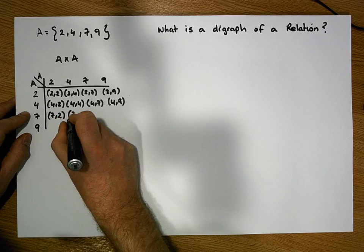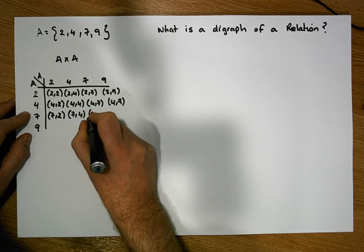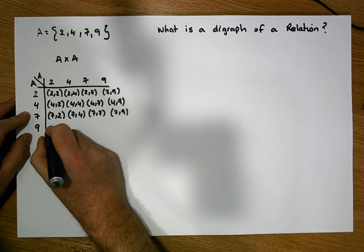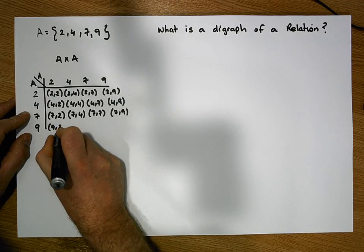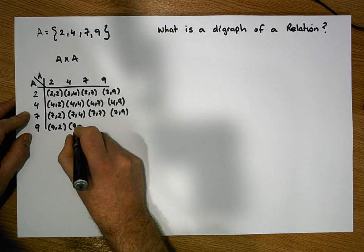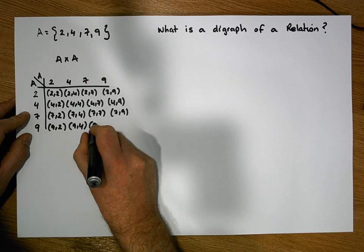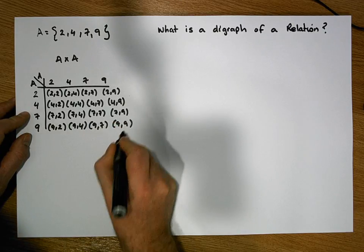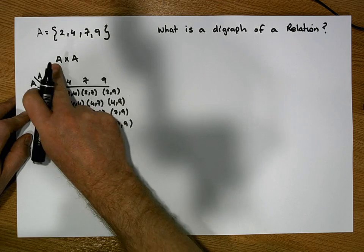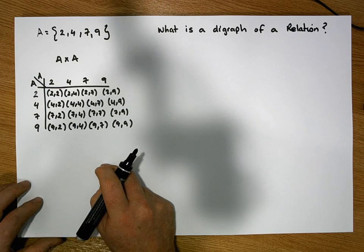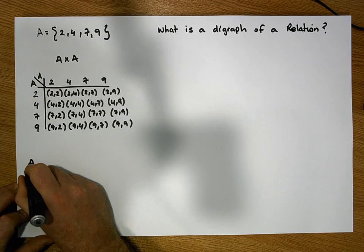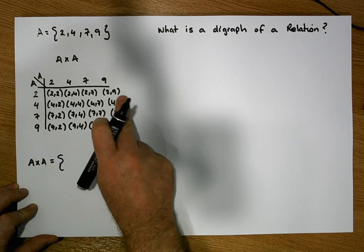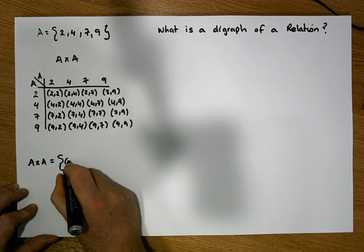Continuing, we have 7 with 4, 7 with 7, and 7 with 9, then 9 with 2. So we can see the cross product of A with A is the set that contains all of these ordered pairs.